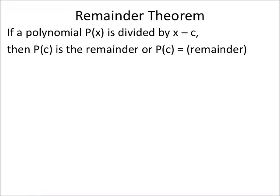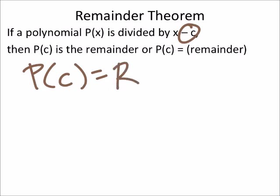Alright, the last part of 6.7 is we got this remainder theorem stuff. So, if we have the polynomial and we've divided it by, in other words, if we can use synthetic division, then the function P of whatever C was, the opposite of this, that's going to equal whatever the remainder is. So you can put an R there if you want. That may or may not make sense right now. Let's go ahead and look at it with an example.